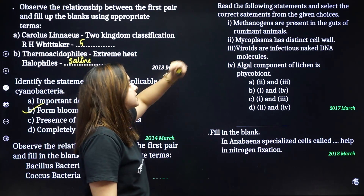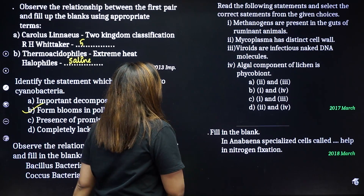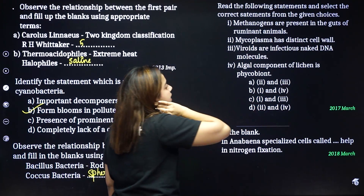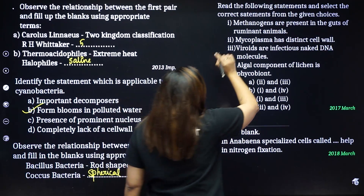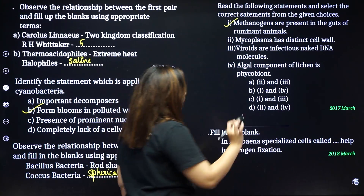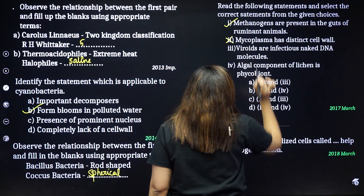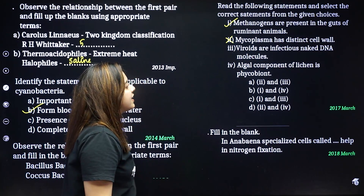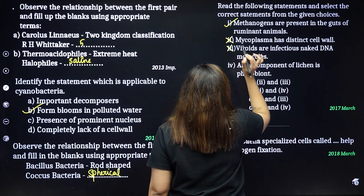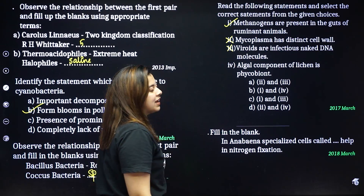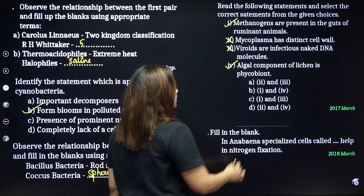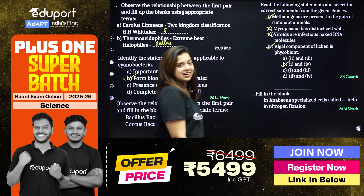Read the following statements and select the correct ones. Methanogens are present in the gut of ruminant animals — that is correct. Mycoplasma does not have a distinct cell wall. Viroids are infectious naked RNA molecules, not DNA. The algal component of lichen is the phycobiont — that is correct. So options 1 and 4 are correct; option B is the answer.